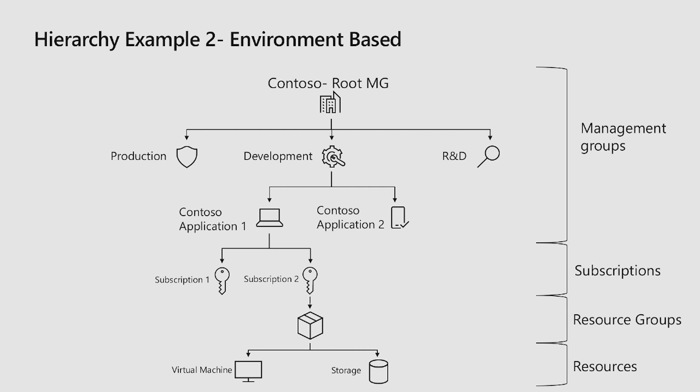A different model — example two — is environment-based. We've seen customers build out their environments based on how they're going to apply policies and role access. Here we're showing Contoso Root Management Group again at the top, but instead of having the different departments, we see Production, Development, and R&D. This gives you different capabilities to apply policy and different role accesses at each one of these levels.